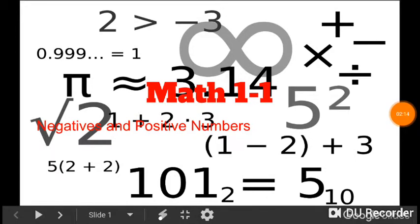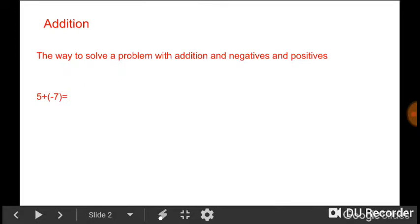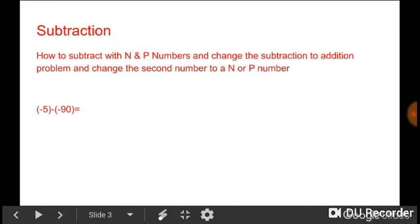Alright, can we learn math today? Math 1-1, negatives and positive numbers. Addition, the way to solve the problem with addition and negative and positives. Solve this problem: 5 plus negative 7. Subtraction. How to subtract with negative and positive numbers and change the subtraction to addition problems and change the second number to a negative or positive number.